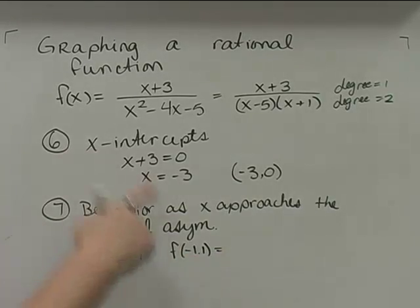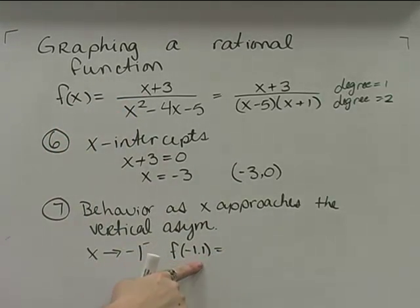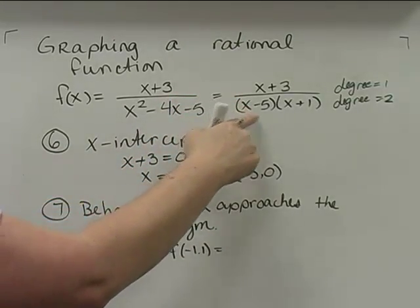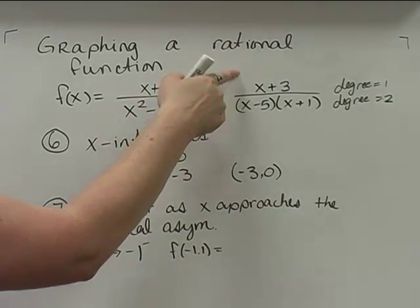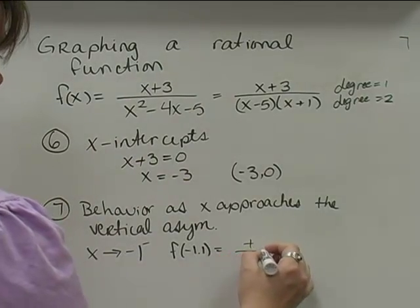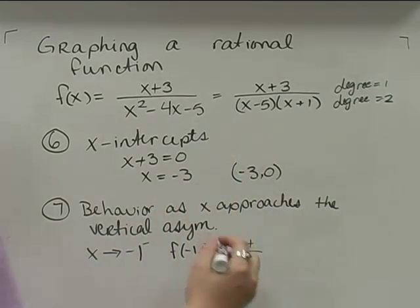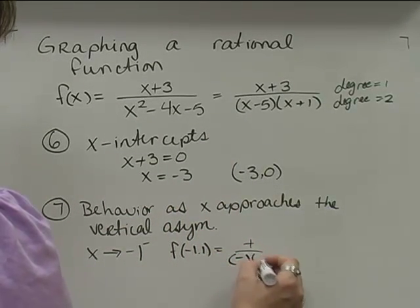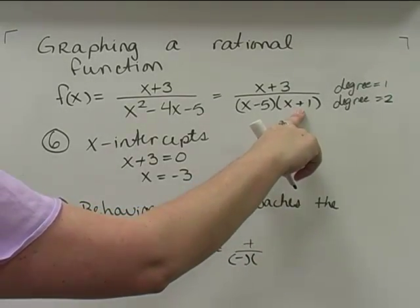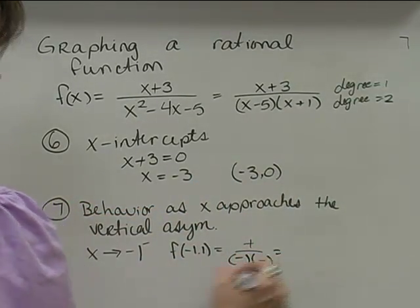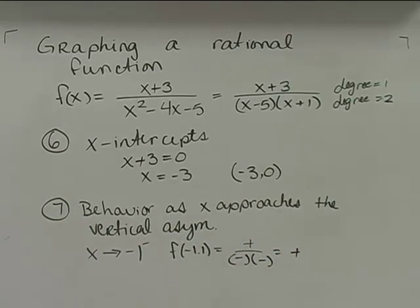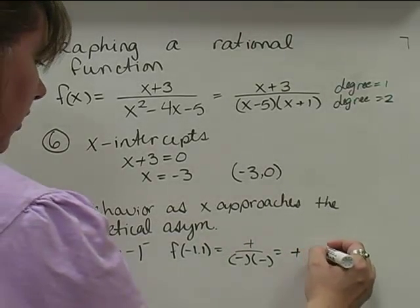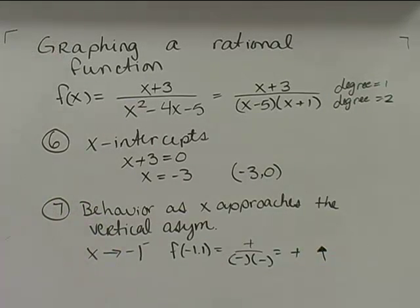I'm going to put negative 1.1 into my original function, and all I care about is the sign of each factor. Putting negative 1.1 into x plus 3 gives a positive number. Putting it into the middle factor gives a negative number. Putting it into x plus 1 also gives a negative number. So I have a negative times a negative, which is positive, divided into a positive — the result is positive. That means as we approach the asymptote from the left, the graph goes to positive infinity.